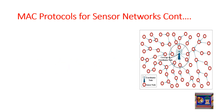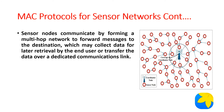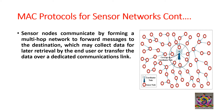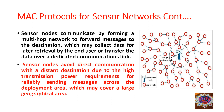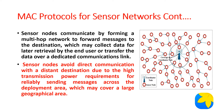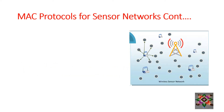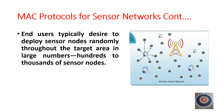Sensor nodes communicate by forming a multi-hop network to forward messages to the destination, which may collect data for later retrieval by the end user or transfer the data over a dedicated communications link. Sensor nodes avoid direct communication with a distant destination due to high transmission power requirements for reliably sending messages across the deployment area, which may cover a large geographical area. End users typically deploy sensor nodes randomly throughout the target area in large numbers — hundreds to thousands of sensor nodes.